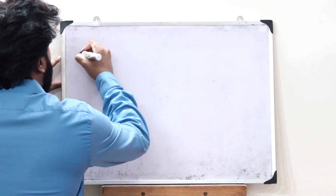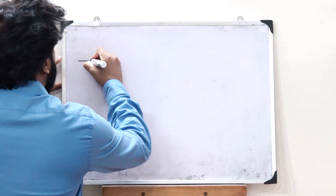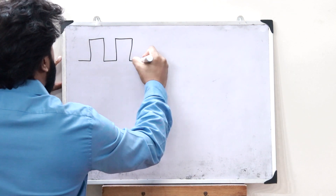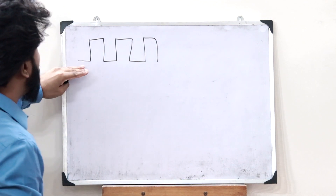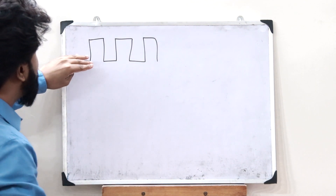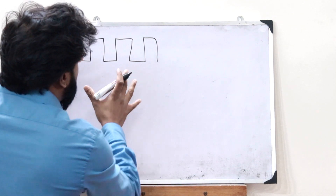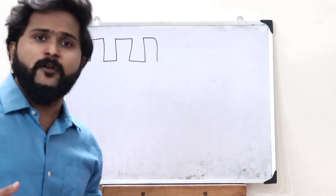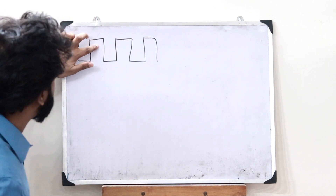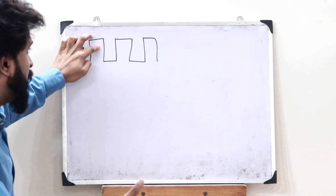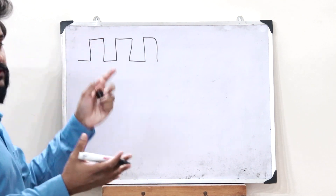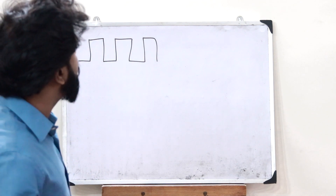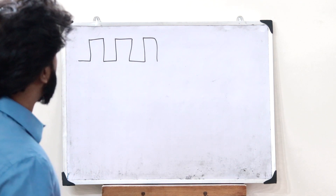A basic pulse width modulated signal would look something like this. It has an alternately on and off position — this PWM signal is basically used to turn on and turn off a particular switch. When it comes to this condition the switch is turned on, and when it comes to this condition the switch is turned off. This is what a basic PWM signal looks like.